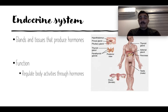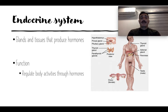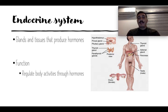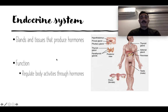The endocrine system is mainly for our hormones. We've got glands like the thyroid gland, the hypothalamus, and the pituitary gland. They mainly produce hormones to regulate body activities. We've also got the ovaries and testes producing different hormones for males and females.